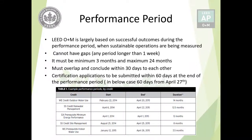The certification application must be submitted within 60 days after the end of the performance period. In the example chart, the last date of the performance period is April 26, 2015, so 60 days from April 27th would be acceptable for the certification application. To summarize: all performance periods should end within 30 days of each other, and the certification application must be submitted within 60 days of the last performance period end date.